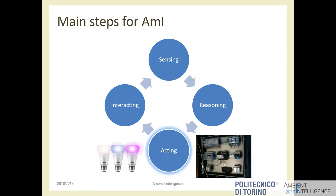If the environment doesn't change, the system is useless. Even the enchanted house needs to do something. You could say 'I built a house with 1000 sensors and a powerful computer' — but if the house does nothing, that's not intelligence, that's a monitoring system. A system is intelligent in the measure it helps users, so it does something for them — proactively if possible. We need something that changes the environment, or changes the user — a notification, a vibration, something that informs the user.